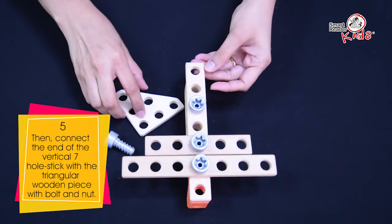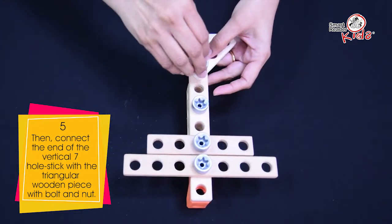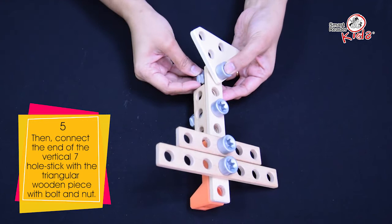Then, connect the end of the vertical 7-hole stick with the triangular wooden piece with bolt and nut.